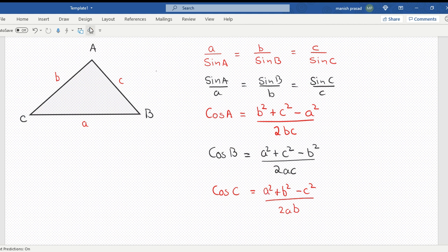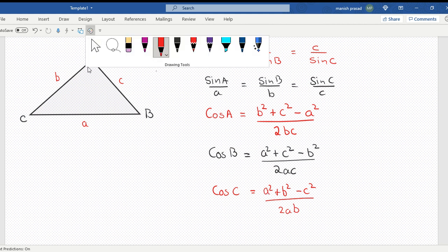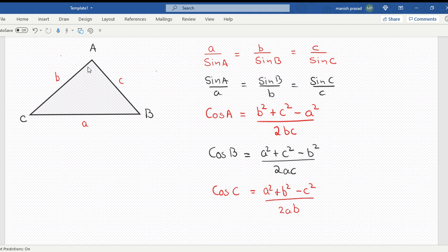Now let's do the derivation of it. Let's say I drop a perpendicular out here. This is my X, so this will be my A minus X. Let's say this is the height. Now I'll apply Pythagoras theorem out here.